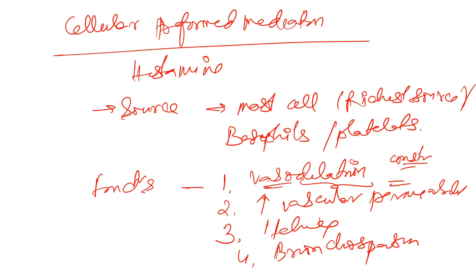If someone has a cold, first thing is nose will be red, that is vasodilation. Then you'll have running nose, that is increase in vascular permeability. Then there's itching. And bronchospasm also occurs from running nose.